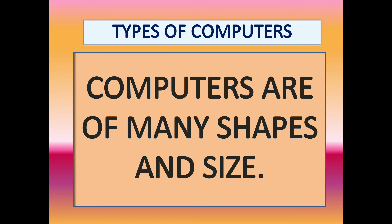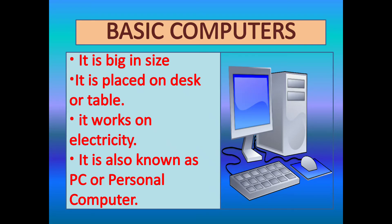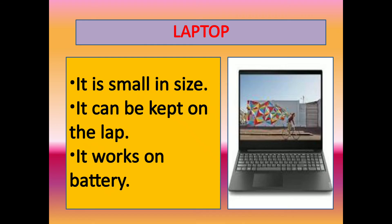Now about the types of computer — computers are of many shapes and sizes. The first one is the basic computer. It is bacon-box size, placed on a desk or table, and works on electricity. It is also known as PC or personal computer. Look at the picture — this is the picture of a basic computer. You must have seen it at your school, or some of you may have one at home too.